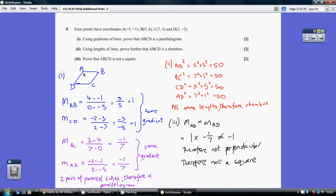Focusing on this corner, the gradient of AB is 1, and the gradient of AD is minus 1/7. When you multiply these together, you get minus 1/7. You do not get minus 1, therefore not perpendicular, therefore not a square.